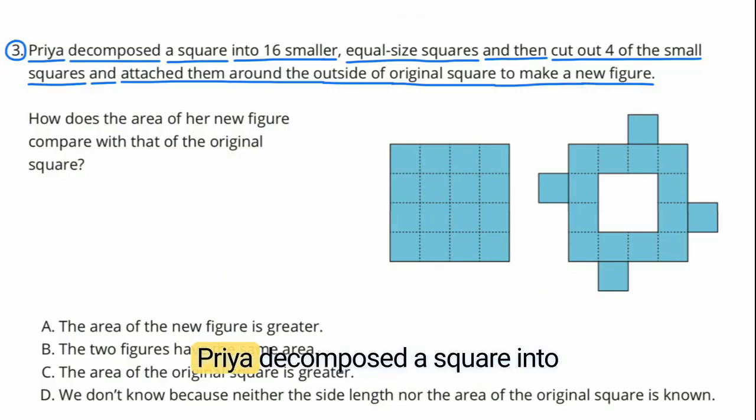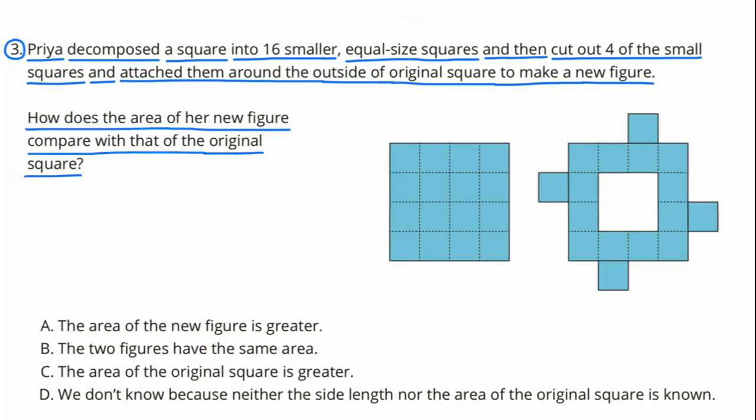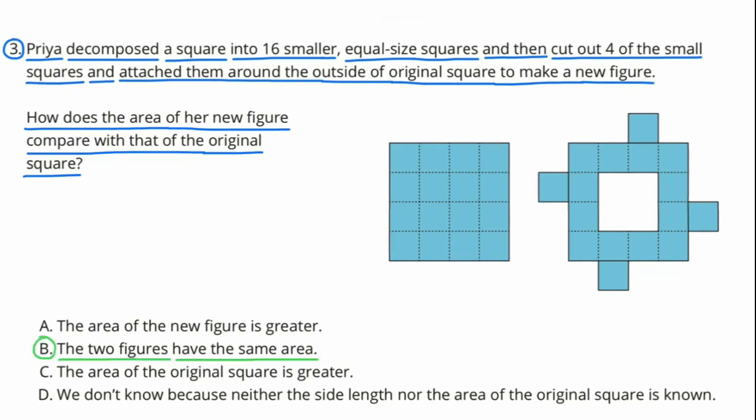Number 3. Priya decomposed a square into 16 smaller equal-sized squares and then cut out four of the small squares and attached them around the outside of the original square to make a new figure. How does the area of her new figure compare with that of the original square? B. The two figures have the same area.